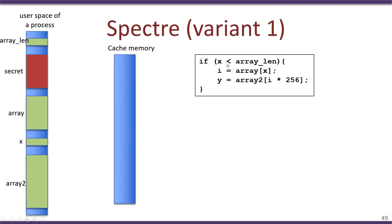To understand the Spectre attack, consider this small snippet of code. It comprises an if-statement where the value of x is checked against array_len, and if x is less than array_len, access to array[x] is permitted. The value of array[x] is taken into i, and then a second array — array2 — is accessed at location i*256, with the result stored in variable y. So array2 is accessed at a location specified by array[x].